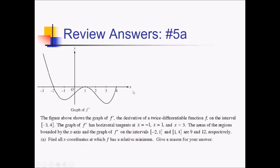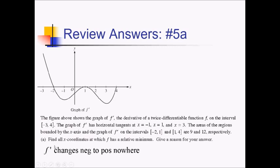For this free response problem, we're basing questions off a graph of f prime on the interval from negative three to four. We're told horizontal tangents exist at negative one, one, and three. First, we want all x coordinates where f has a relative minimum, with a reason. We're looking for where f prime changes from negative to positive. We change from positive to negative at negative two, and from negative to negative at one. Since there is no place where f prime changes from negative to positive, we have no relative minimum on the given interval.